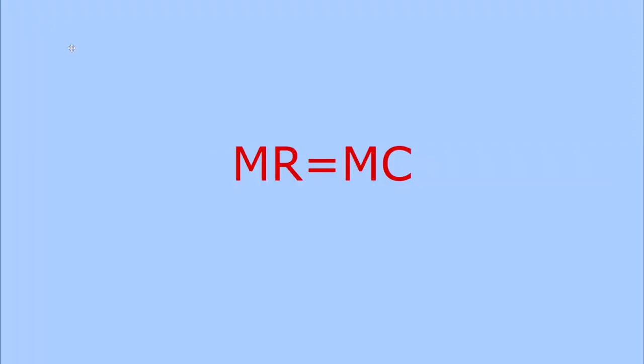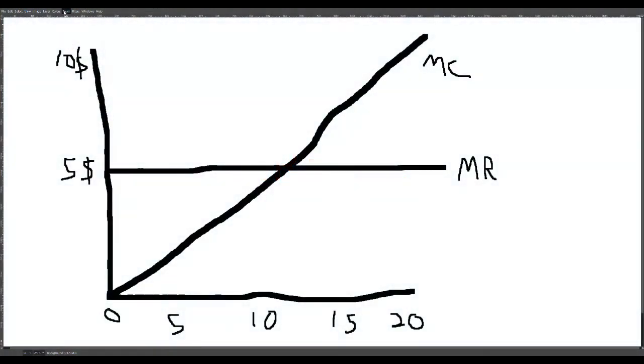Alright, so MR equals MC is the crux of profit maximizing rule, and this is not a super difficult concept, but it is super important. The main thing that you need to take away from this is that MR equals MC when you want to maximize profits. This doesn't mean that marginal revenue is the same thing as marginal cost, it just means if you're ever looking at a graph and you want to find where firms produce to maximize profits, it's always where MR intersects MC. This is the most important takeaway from this unit and we're going to drill the hell out of it in this video.